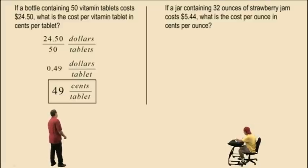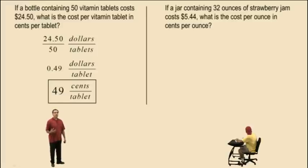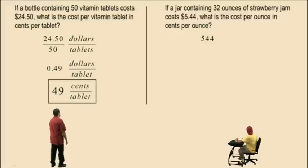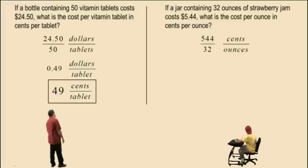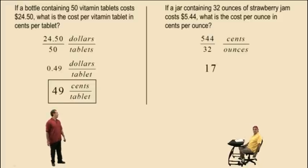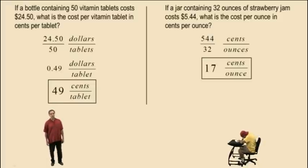If a jar containing 32 ounces of strawberry jam costs five dollars and 44 cents, what is the cost per ounce in cents per ounce? First we convert $5.44 to cents — there are 544 cents in $5.44. We write 544 cents over 32 ounces. 544 divided by 32 is 17. So our final answer is 17 cents per ounce. That's enough for now — hope to see you again soon.